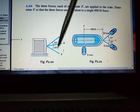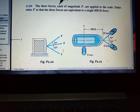This is our question and this is the figure. The three forces, each of magnitude F, are applied to the crate. Determine F so that the three forces are equivalent to a single 600-pound force.